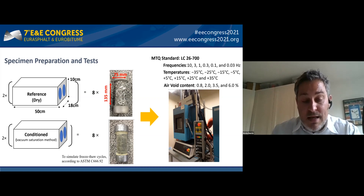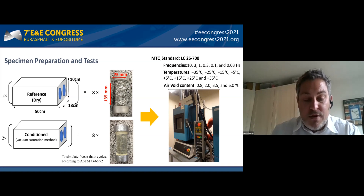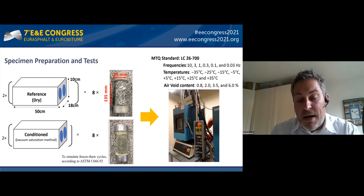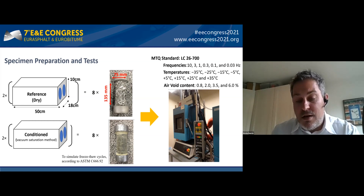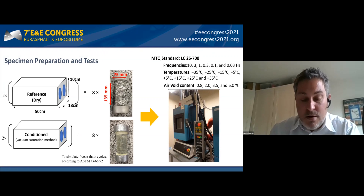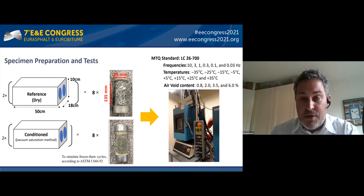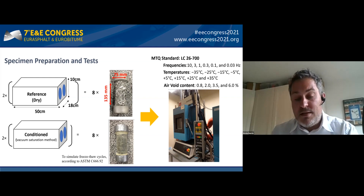The ASTM method applies a cooling and heating rate of 4.5 degrees per minute, with two target temperature levels: minus 18 and plus 6 degrees. The temperature remains constant for one and a half hours at each level. Dynamic modulus and complex modulus tests were then performed before and after conducting the rapid freeze-thaw cycles. The three major parameters for the complex modulus test are: air void content (0.8 to 6%), frequency (0.03 to 10 Hz), and test temperature (minus 35 to plus 35 degrees).